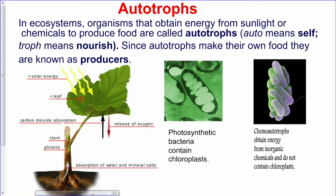Autotrophs are organisms or plants that make their own food. 'Auto' means self and 'troph' means nourish — they are able to self-nourish themselves. From the diagram, we can see light coming from the sun striking a leaf; carbon dioxide is utilized by the leaf and oxygen is released out. We also have photosynthetic bacteria that contain chlorophyll, and chemo-autotrophs that obtain energy from inorganic chemicals and do not contain chloroplasts.